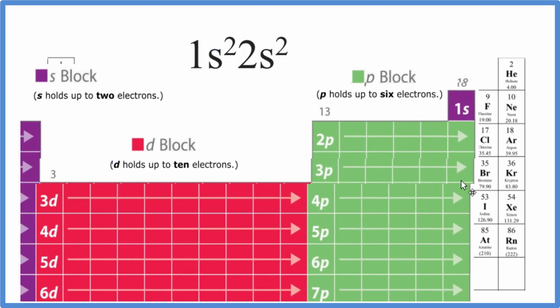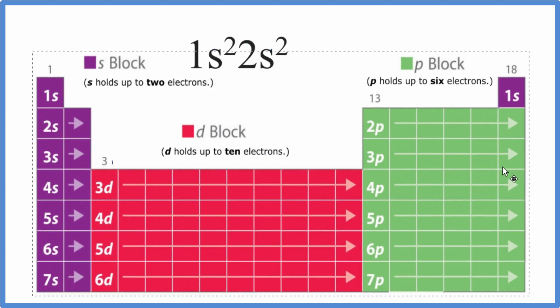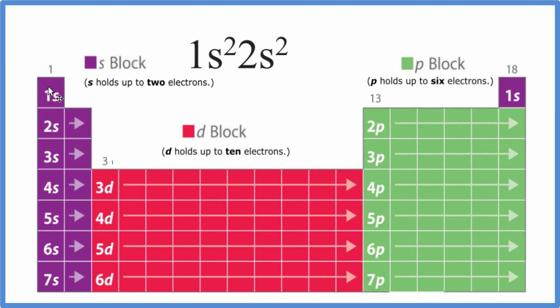We could also look at the periodic table broken down into these orbital blocks. So here we have this first group here. All of these end in s1. All of these will end in s2.